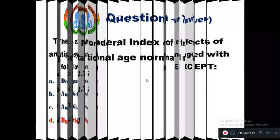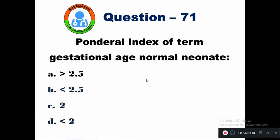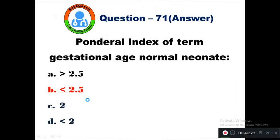Question 71: Ponderal index of term gestational age normal neonate is — option A more than 2.5, B less than 2.5, C 2, D less than 2. The ponderal index of term gestational age normal neonate is less than 2.5. Option B is the right answer.